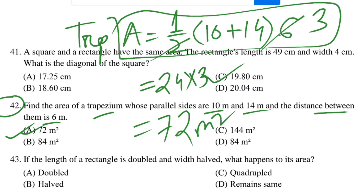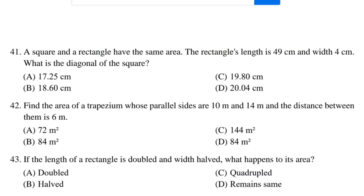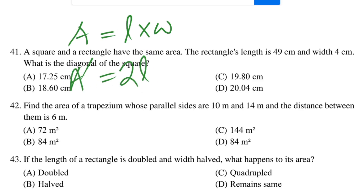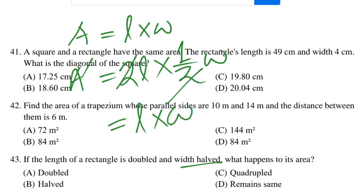Question 43: If the length of a rectangle is doubled and the width is halved — length times 2, width times 1/2 — what happens to its area? The area remains the same, because 2 times 1/2 equals 1. So the area is unchanged. Same option.